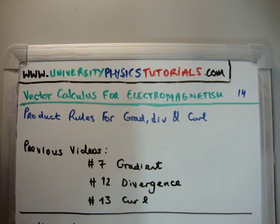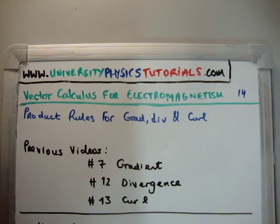The general topic of product rules for the grad, div and curl are very important. Why? Because without those you can't derive Maxwell's equations. You'll find a lot of the manipulations that are done in electromagnetism or electrodynamics basically rely on all of these product rules. So these are something you should definitely understand, or you'll look back at some stage and wonder how a particular formula came about — it all comes down to these product rules.